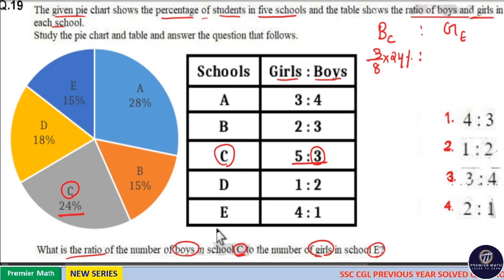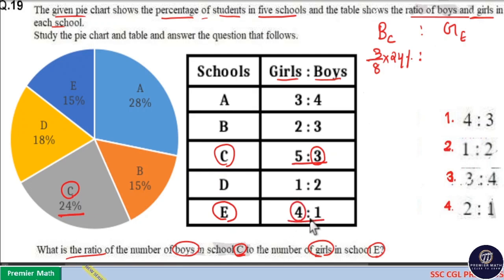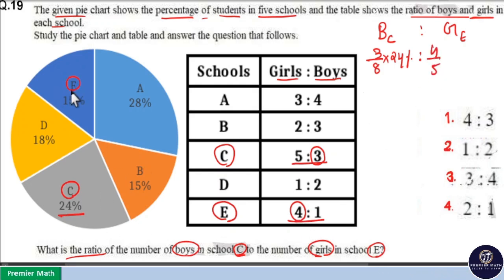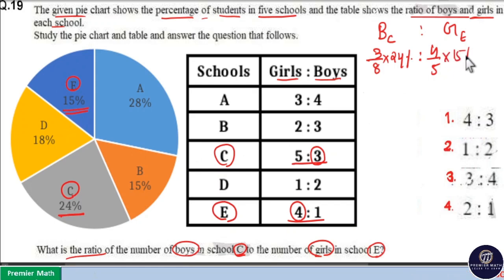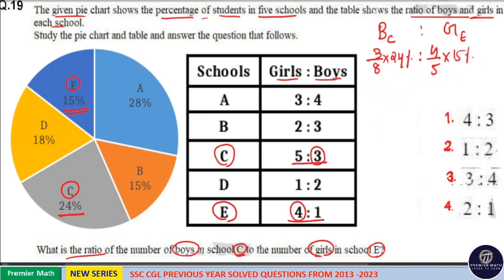Now for girls in school E, there are 4 parts girls out of 4 plus 1, which is 5 total parts. So 4 by 5 is the ratio of girls in school E. In school E there are 15 percentage of total students. So the total number of girls in school E is 4 by 5 into 15 percentage.